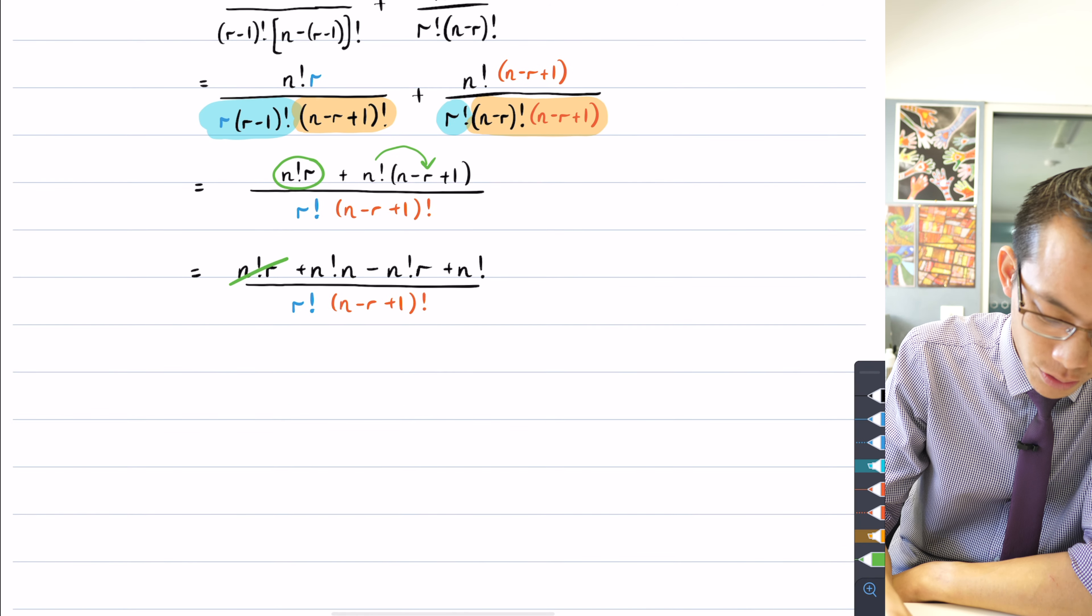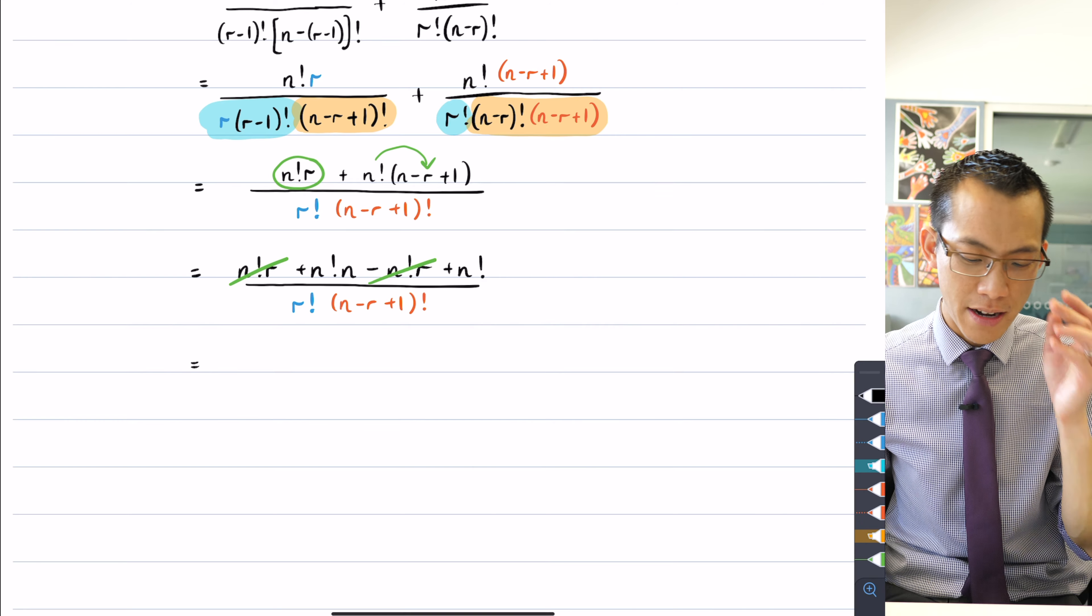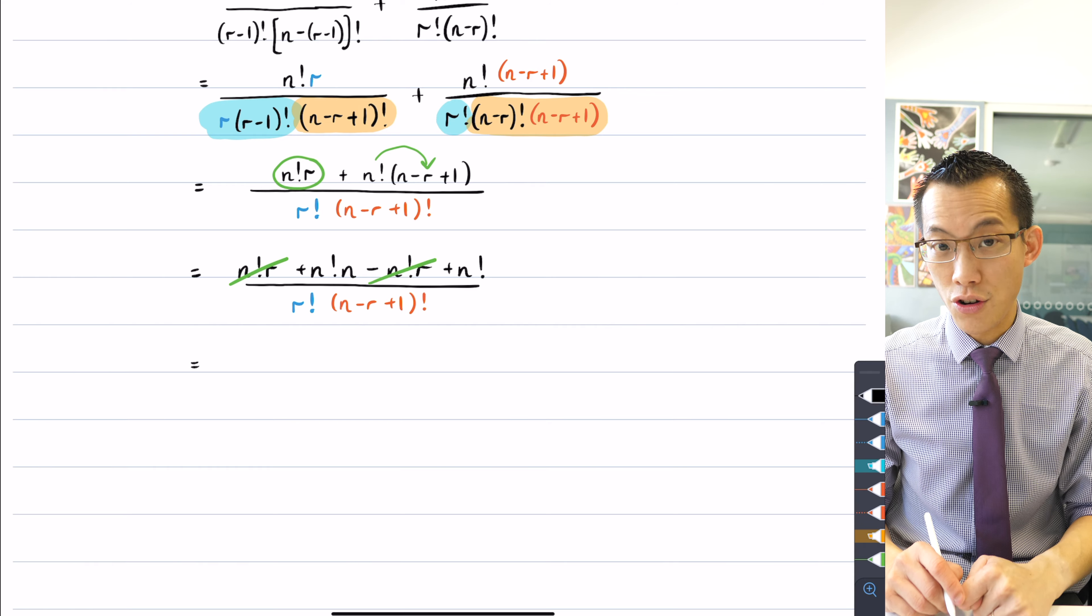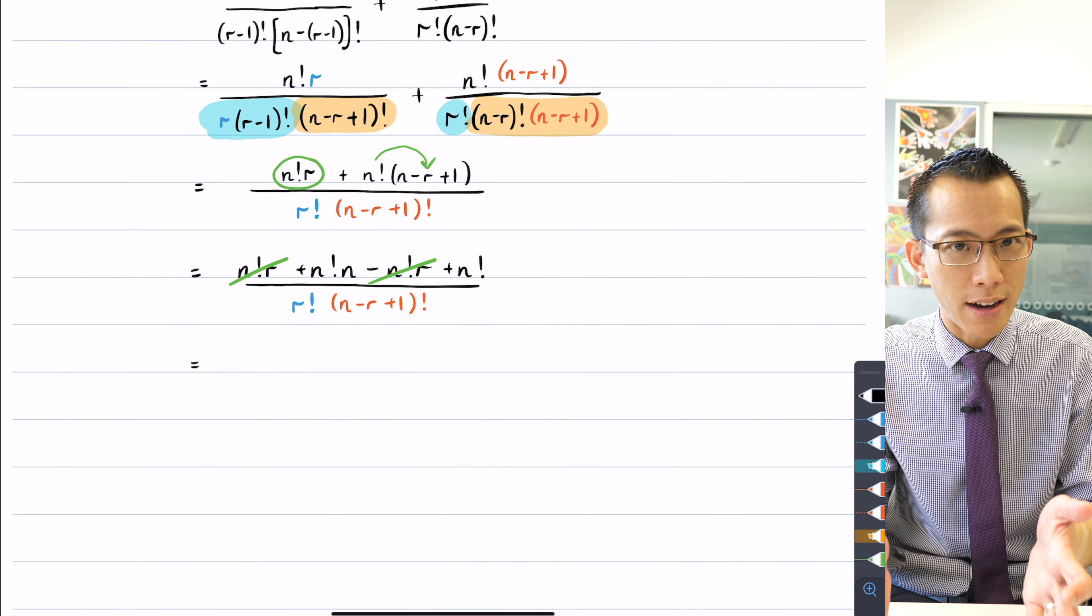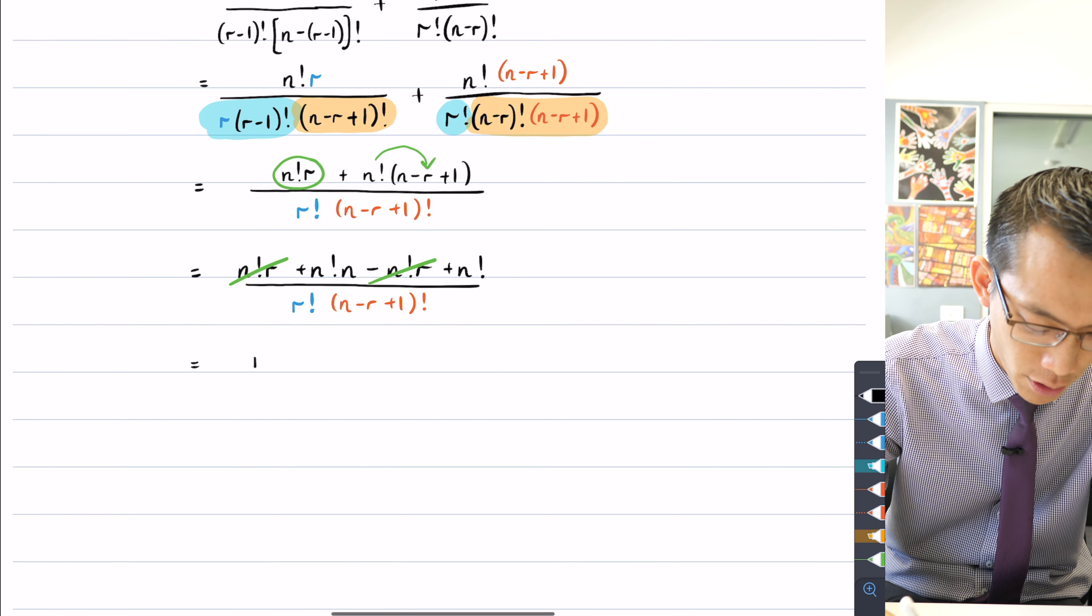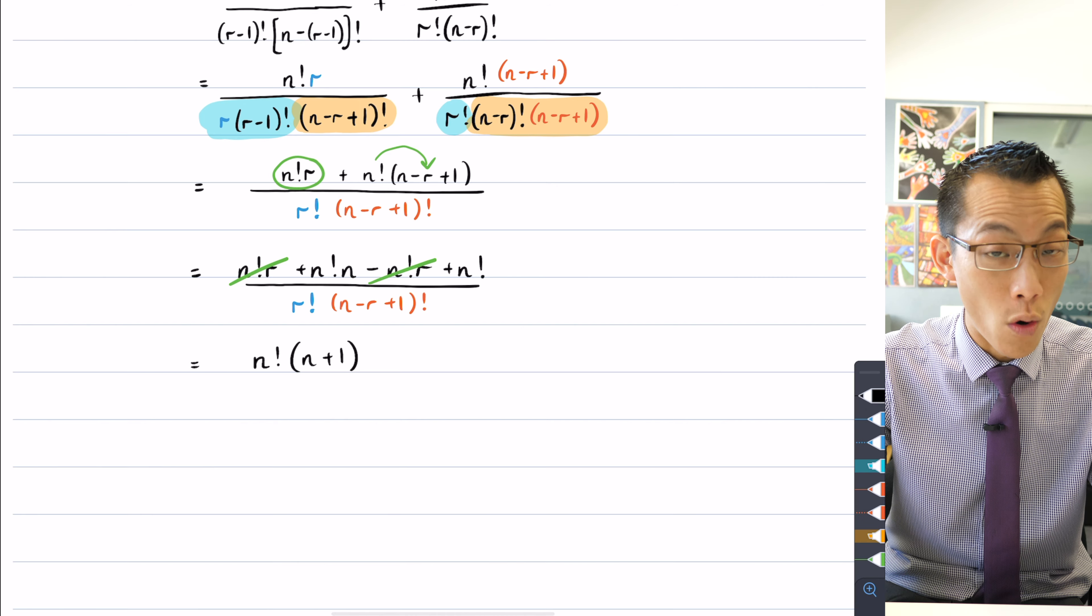Okay, so what's going to happen now? Cancel, cancel as I noticed before and perhaps I shouldn't have expanded this all the way because you can now see on the numerator there is this common factor of n factorial. So I've got n factorial outside of n plus 1.